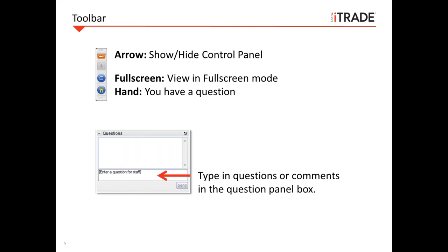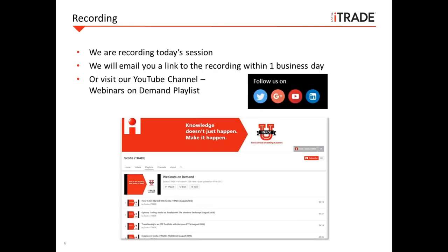Let's quickly review the toolbar features. The orange arrow at the top of the toolbar can be used to minimize or maximize the toolbar. You can use the hand icon to notify a question or concern, and view in full screen mode by clicking on the computer icon. We prefer that you use the question panel box on the GoToWebinar — just type your question in. I'll be monitoring those questions as the presenter goes through and will notify them accordingly. The presenter may choose to address questions at the Q&A session after.